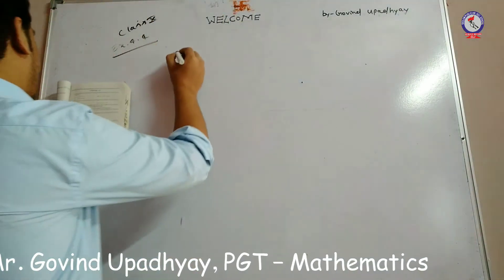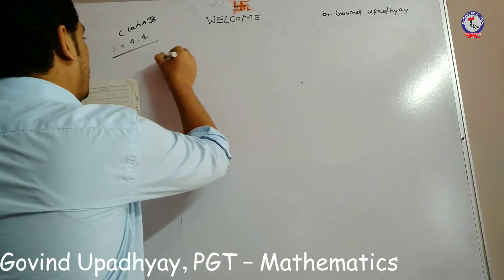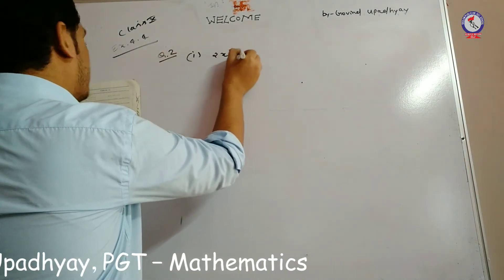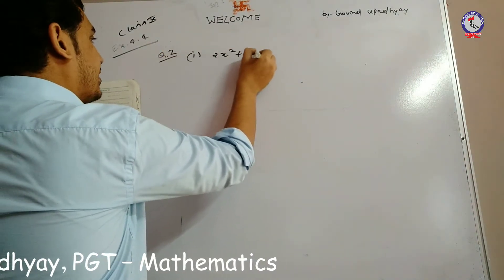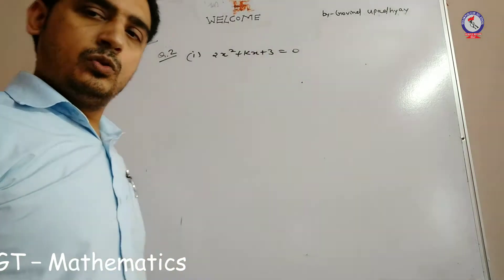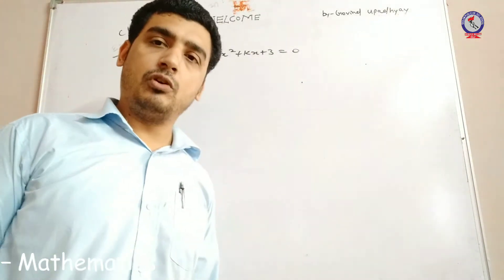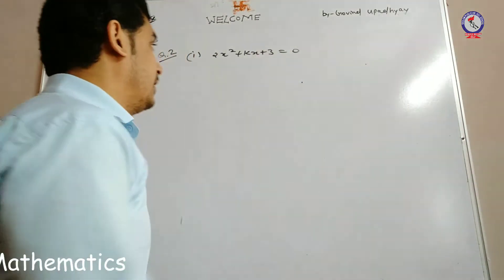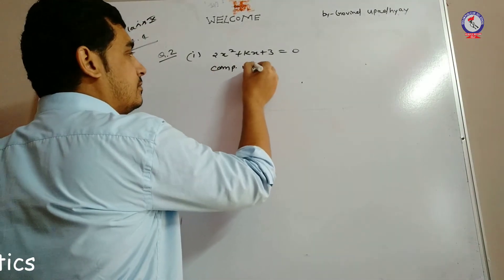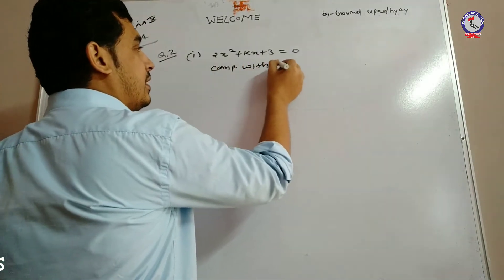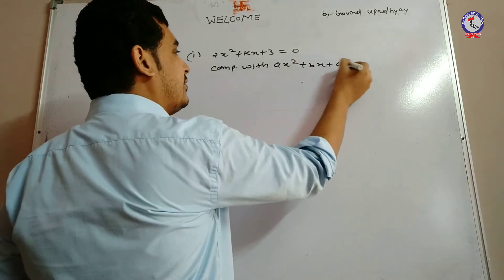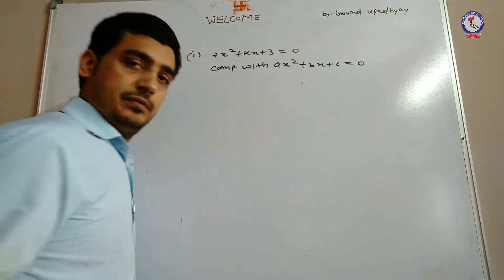Question number 2, first part: 2x squared plus kx plus 3 is equal to 0. We have to solve this question by comparing with ax squared plus bx plus c is equal to 0.